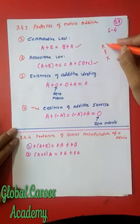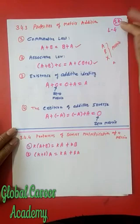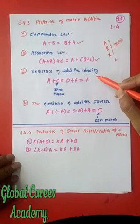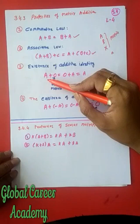In this chapter, if we are using capital letters like A, B, or X, that represents a matrix. If we use small letters, that means it represents numbers. Third is the existence of additive identity.